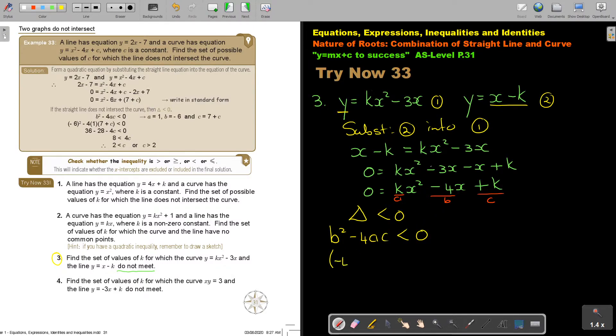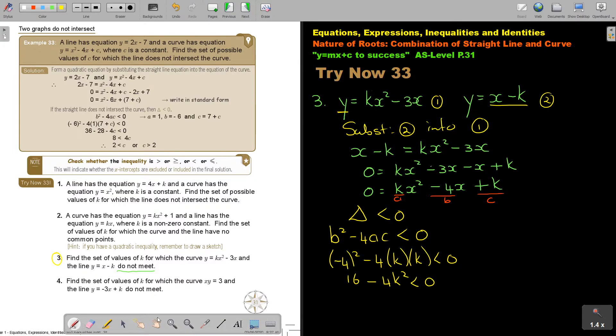So, that will be 16 minus 4k squared is smaller than 0. Now, take note. This is a quadratic inequality. So, I'm going to make use of a sketch. First, let's start. You can rearrange it also. But this is the value of A. If I'm looking at this, I'm just going to say A is smaller than 0.